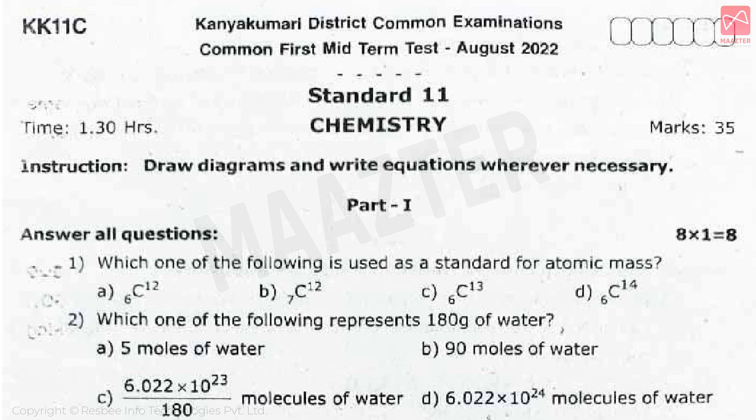First, one-mark section. Eight questions are available in the Kanyakumari district first mid-term question paper. The first question: which of the following is used as a standard for atomic mass? The correct answer is option A, C-12. C-12 is the standard used for atomic mass.